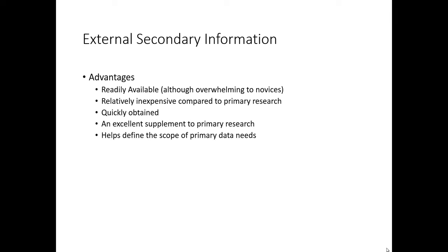To wrap up, there are some key advantages of using external secondary information. First, secondary information is readily available — we are in a data-dense world when it comes to marketing today, though it can be a little overwhelming to novices to know where to find the particular types of information they're looking for. Secondary information is usually very inexpensive compared to primary research, and it's also very quickly obtained — you're able to skip over the actual execution of a research project and come right to the results and analysis. In addition, secondary information can be an excellent supplement to your own primary research, and it helps you define the scope of your primary data needs. Any marketing research project should start with a search for internal and external secondary information, and if those sources don't adequately address the question, it becomes much clearer what types of information must be gathered through primary data collection.